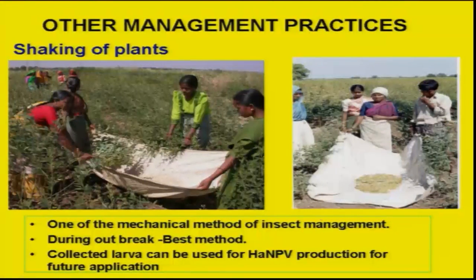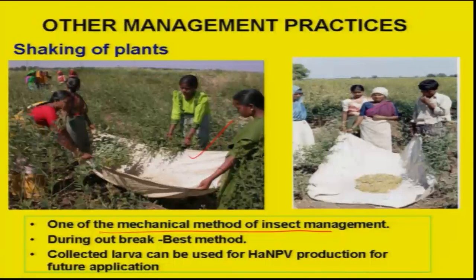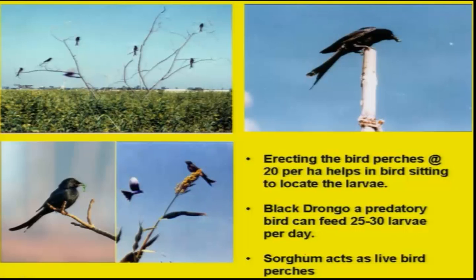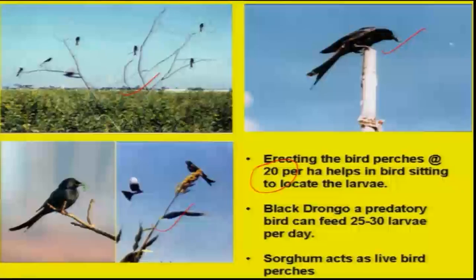Other mechanical methods also need to be incorporated. If labor is available, shaking of the plant is simple — at that stage, seed setting is over and pod development is taking place, so fully grown larvae can be collected in plastic or cloth. These larvae can also be used for mass production of NPV in the laboratory. The erection of dead wood branches or live sorghum branches, about twenty per hectare, helps attract the black drongo bird, which can predate on Helicoverpa larvae within a one-meter radius — effective even against larval stages where insecticides do not work.